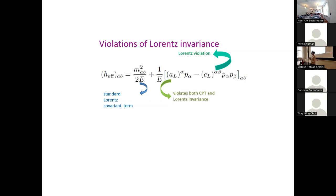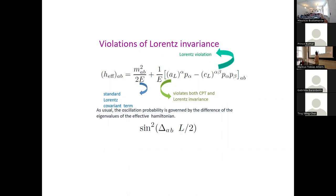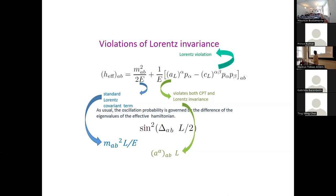Nature is very kind — it's not as complicated as it seems. You can understand spectral distortions with your fingers, because the kinematic phase is driven by differences in eigenvalues of the effective Hamiltonian. Comparing the standard L/E term with the CPT-violating A term: energy cancels, so this term has no energy dependence and depends only on baseline. The Lorentz-violating C term has two powers of energy in the numerator, so it scales as L×E. This means there are huge, distinct spectral distortions for each type of violation.